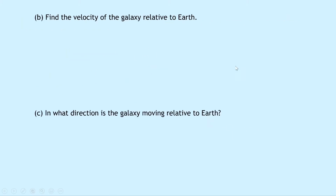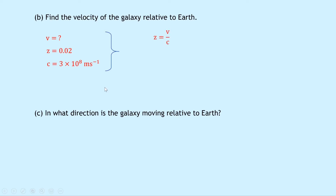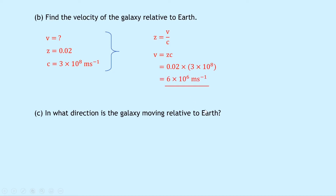Part B says to find the velocity of the galaxy relative to the Earth. We're trying to find the recessional velocity v. We know that z is 0.02 from Part A, and the speed of light c is 3×10⁸ meters per second. Our equation is z equals v over c — the definition of redshift in terms of the ratio of velocities. Rearranging gives v equals z times c. Substituting in: 0.02 times 3×10⁸ gives 6×10⁶ meters per second.